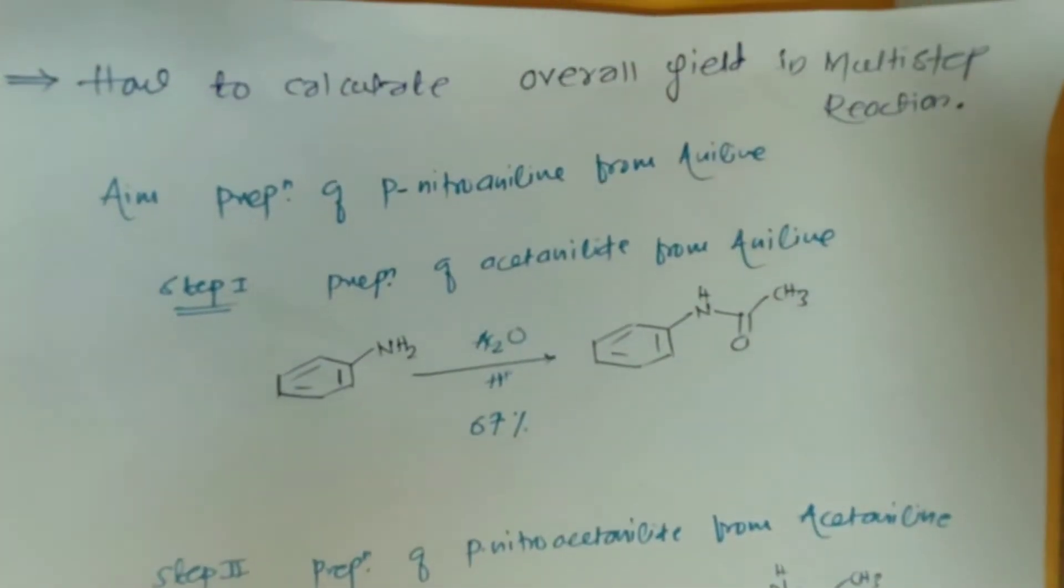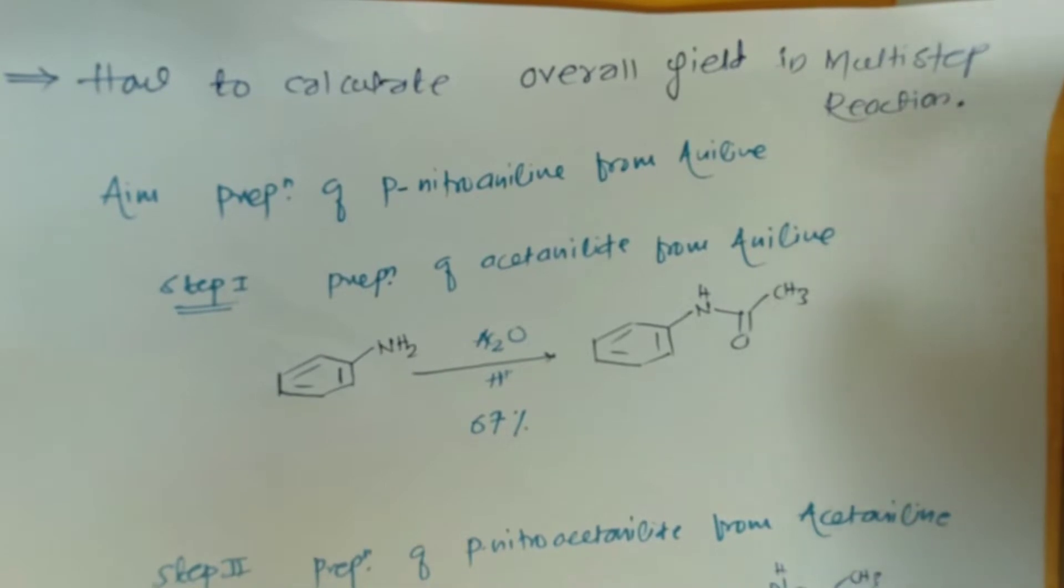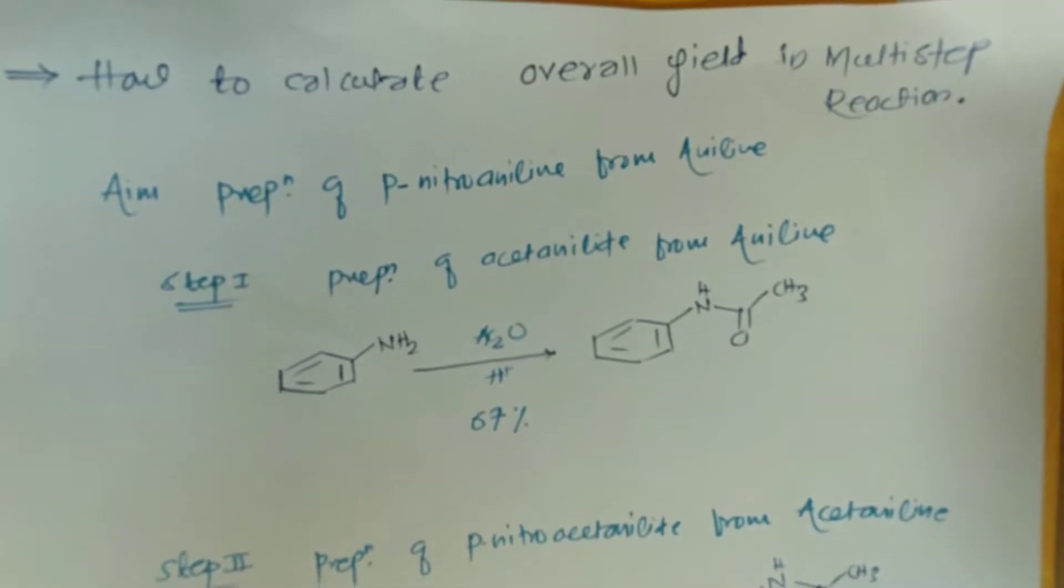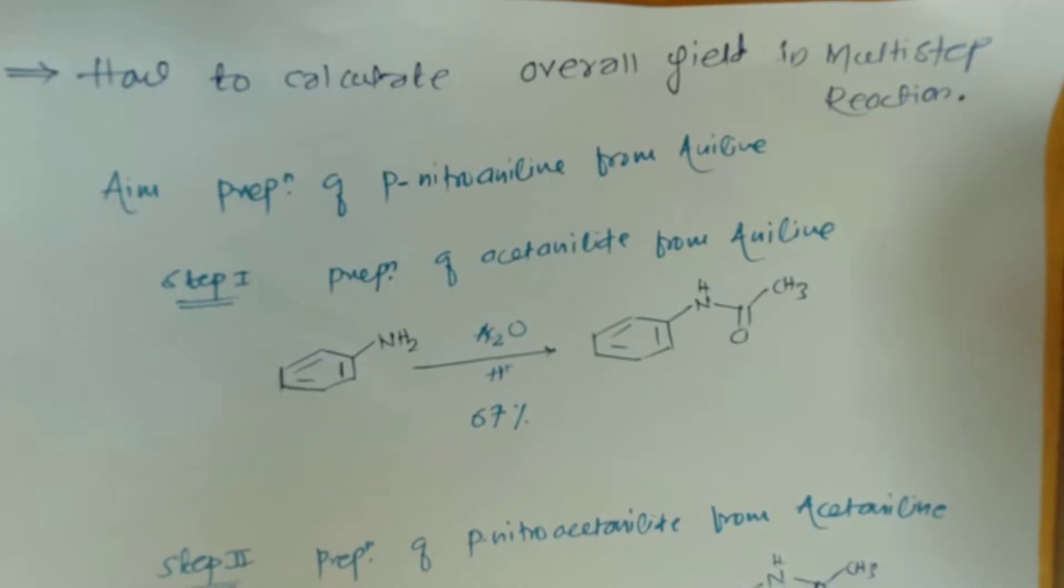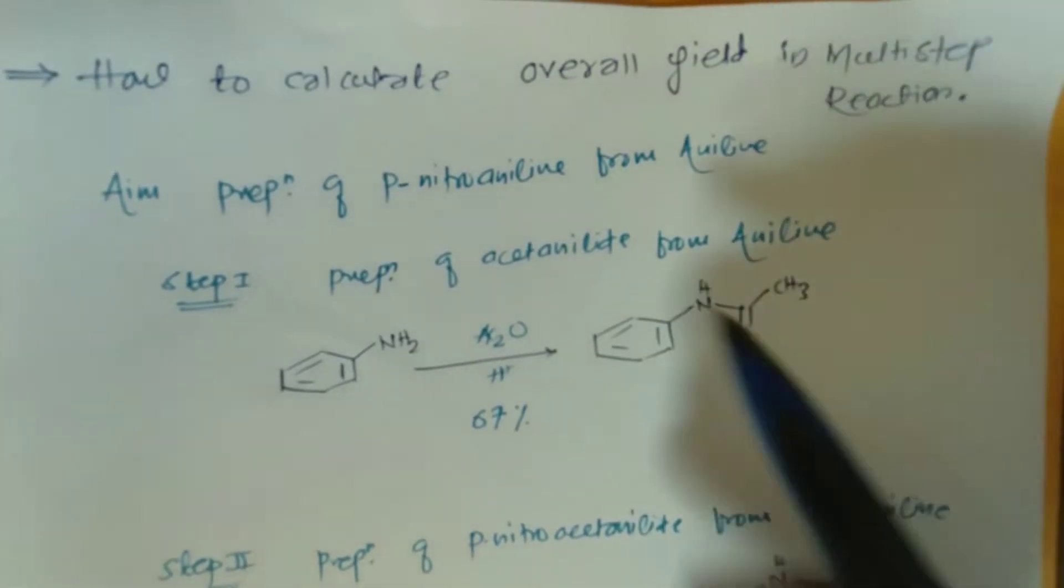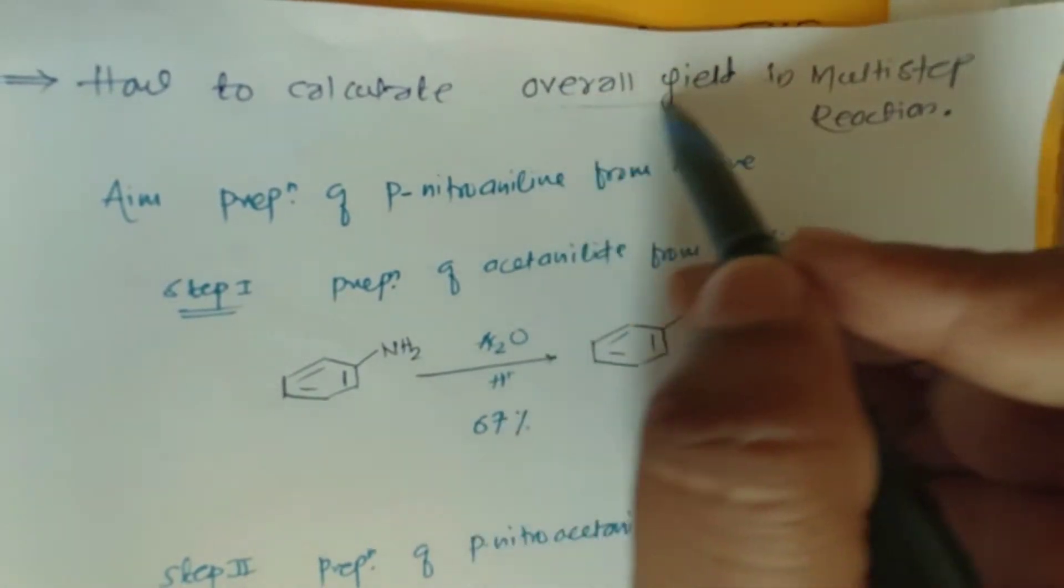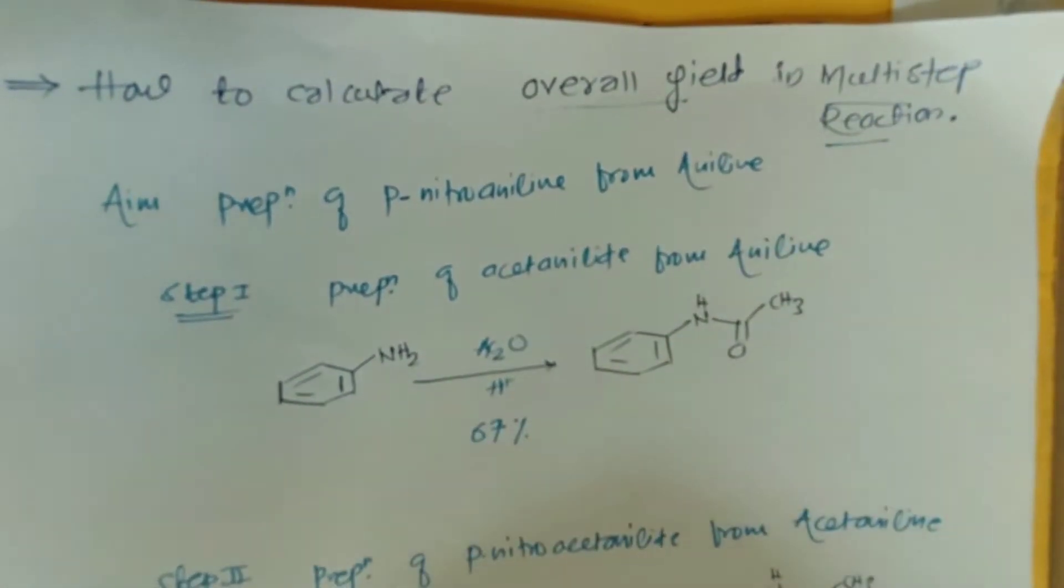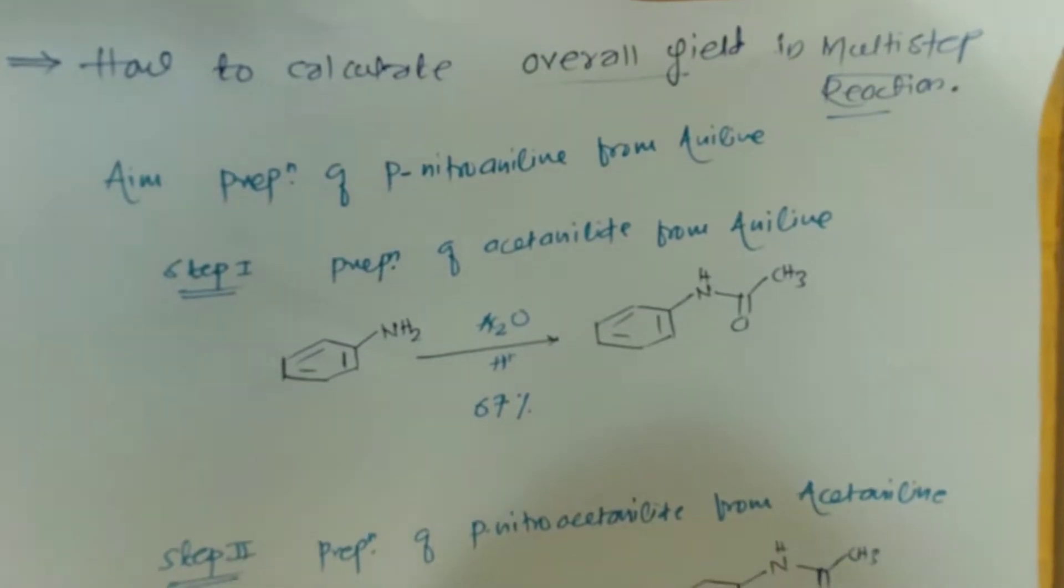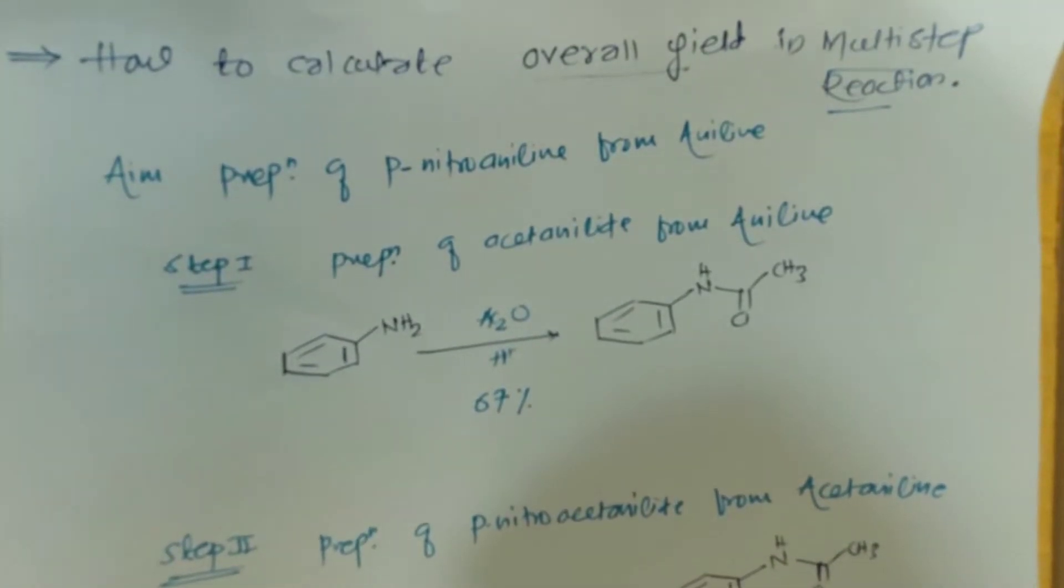Hello, welcome back. This is Amit Shrek. In this video, I'm going to demonstrate how to calculate the overall yield in a multi-step reaction. The reaction given is the preparation of para-nitro aniline from aniline.